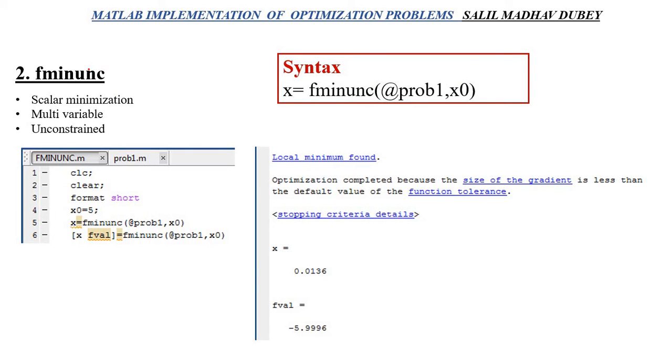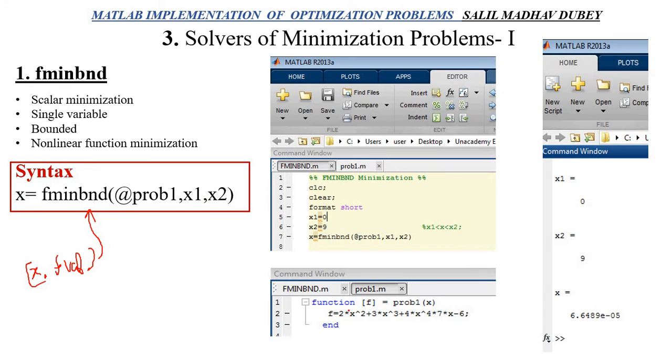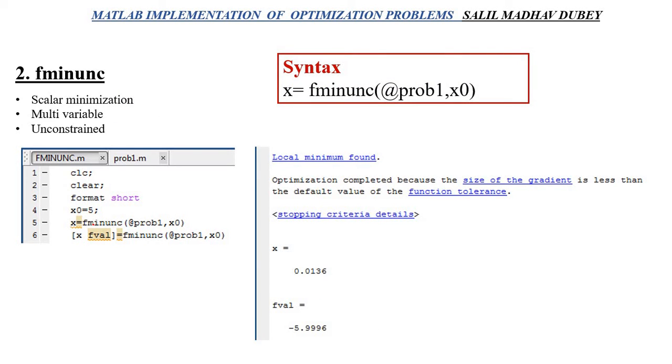Now we come to our second solver, which is fminunc. Until now, we saw that we gave a minimum and maximum limit which acts as a constraint. Now suppose I don't want a constraint. I only know one point and I want my function to work in an unconstrained way. For that we use fminunc. One more advantage of fminunc is it is a multivariable function. It can be used for an objective function with multiple variables. This first example I took is for a univariable case with only one variable x. You know prob1. Earlier I used fminbnd, now I will use fminunc for the same objective function.